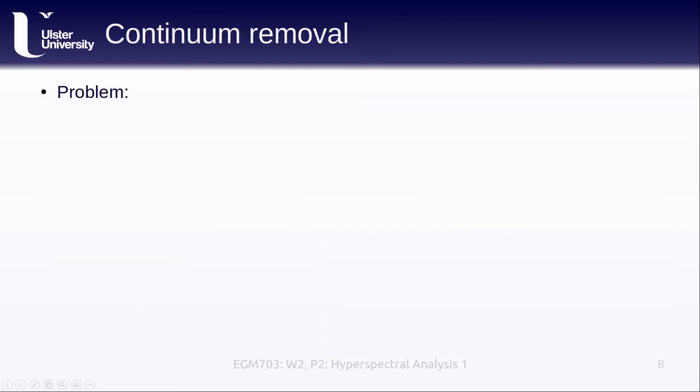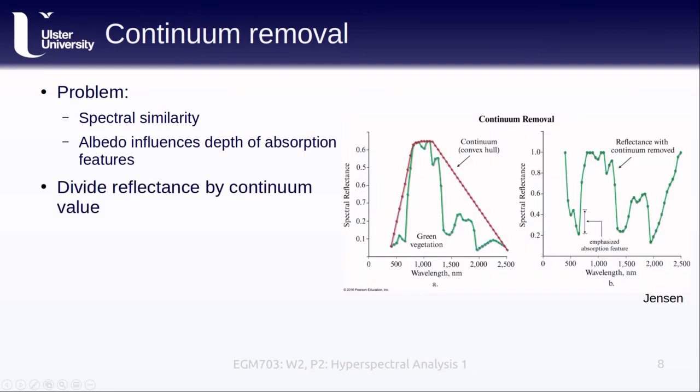One problem that we will often encounter is that a number of spectra are very similar. Another issue is that the albedo, which partly depends on the viewing angle and the incident radiation, has a big influence on how deep the absorption features in a given spectral signature are. For example, in the image on the left here, we can see that the red absorption feature is quite small, only about 0.05 to 0.1, or 5 to 10%.